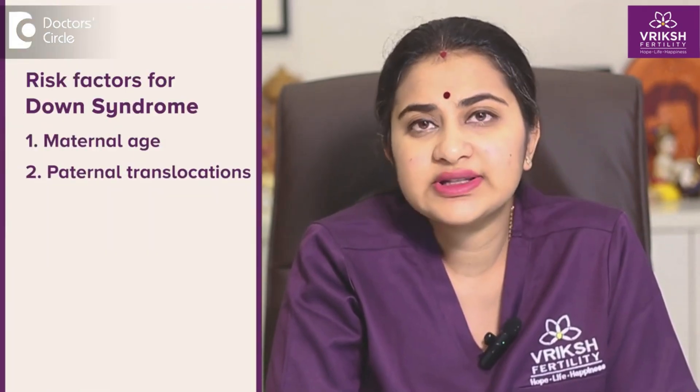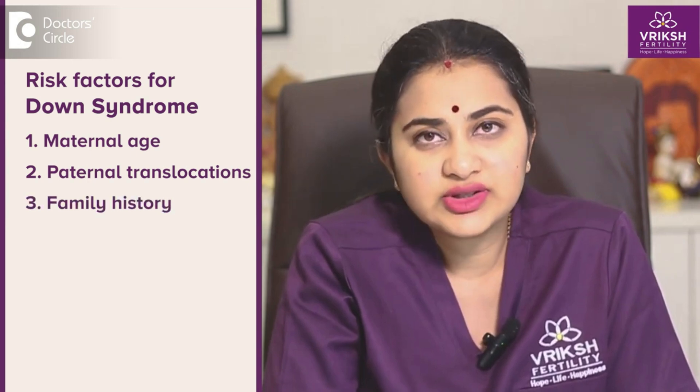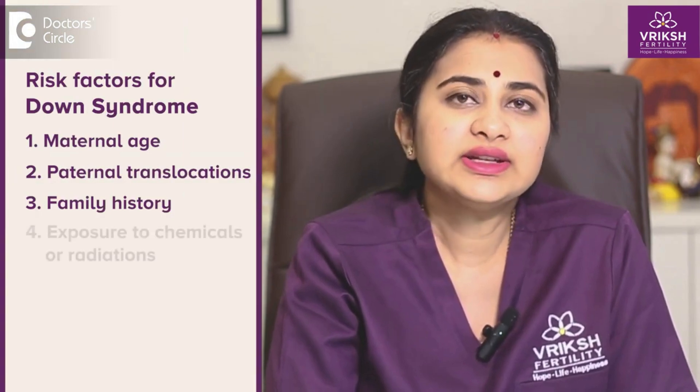Not that younger women cannot have Down Syndrome — it is more commonly seen with advanced age. The second risk factor is parental translocation: if the mother or father carry certain translocation or genetic abnormalities, these can be transmitted to the embryo causing Down Syndrome. The third risk factor is a family history of Down Syndrome or a previous pregnancy with Down Syndrome. The fourth risk factor is exposure to certain chemicals or radiations.